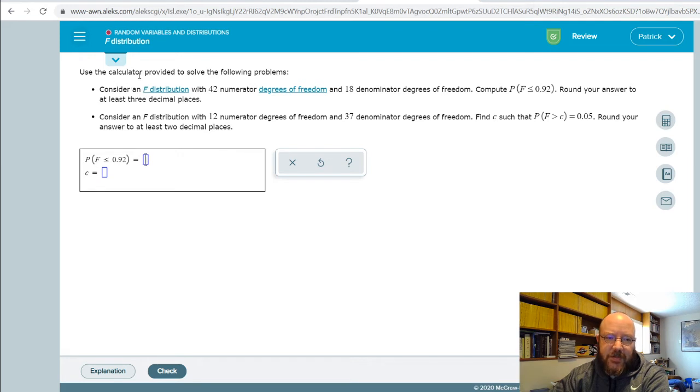Use a calculator provided to solve the following problems. Consider an f distribution with 42 numerator degrees of freedom and 18 denominator degrees of freedom. There are two types of degrees of freedom here that we're going to use, especially when we get to ANOVA.